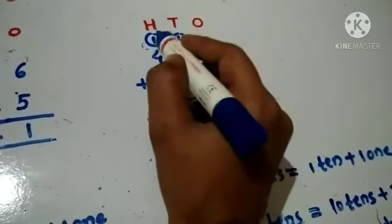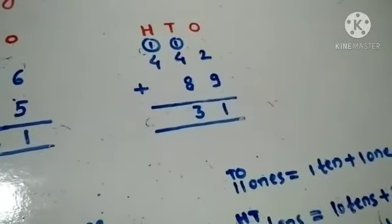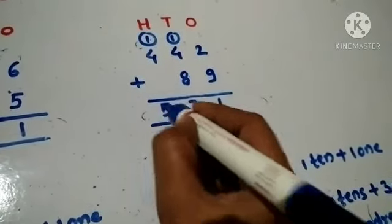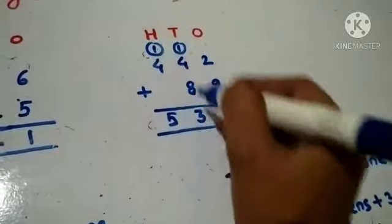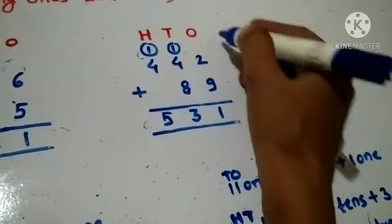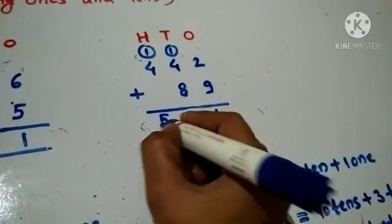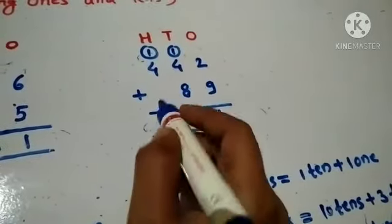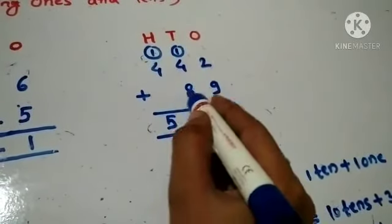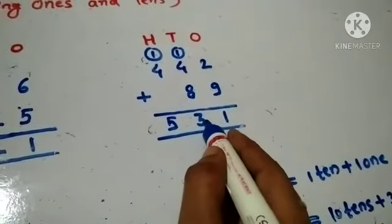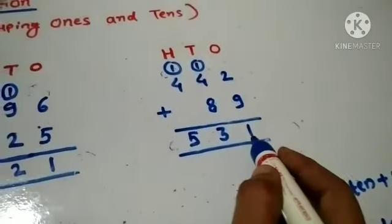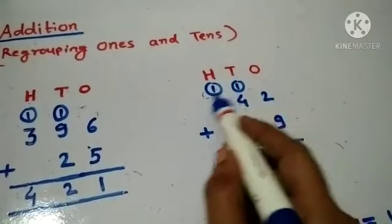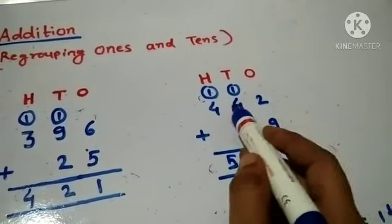Now add the 100's: 1 plus 4 is equal to 5. Now we have 500, 3 10's, and 1 one — that is the number 531. So 442 plus 89 is equal to 531. Regrouping 1's and 10's.